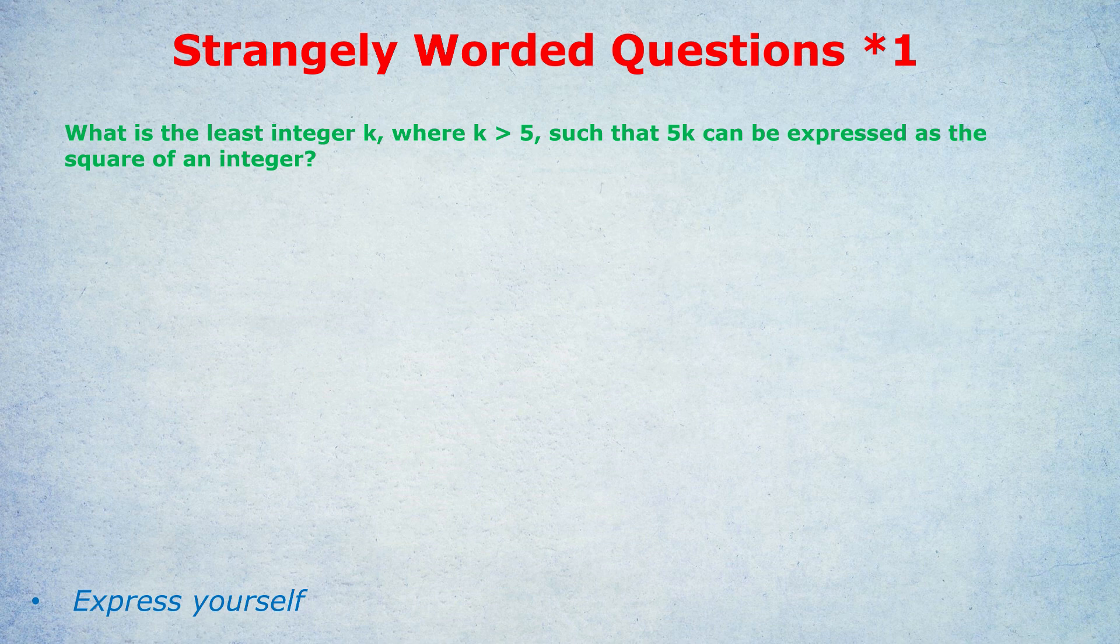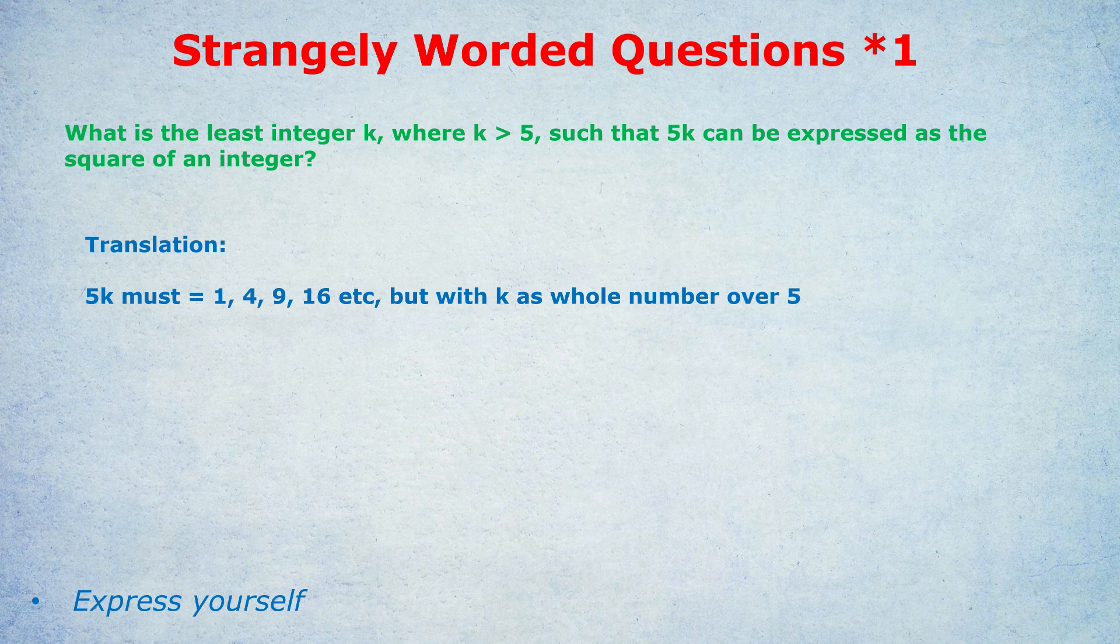Many students would be intimidated by the way that question sounds and the words being used. But actually, it has quite a simple translation. We need 5k to be expressed as a square of an integer. That just means 5k must equal a square number.